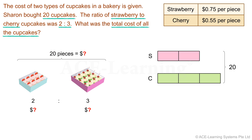What are we required to find? We are required to find the total cost of all the cupcakes. In a model, we indicate the value we are to find with a question mark. So the question mark should go next to the total. Notice that these units represent quantity, but what we are required to find is the total cost. So not only do we need to know the total quantity of each type of cupcakes bought, we also need to find the total cost of each type of cupcakes bought in order to find the total cost.